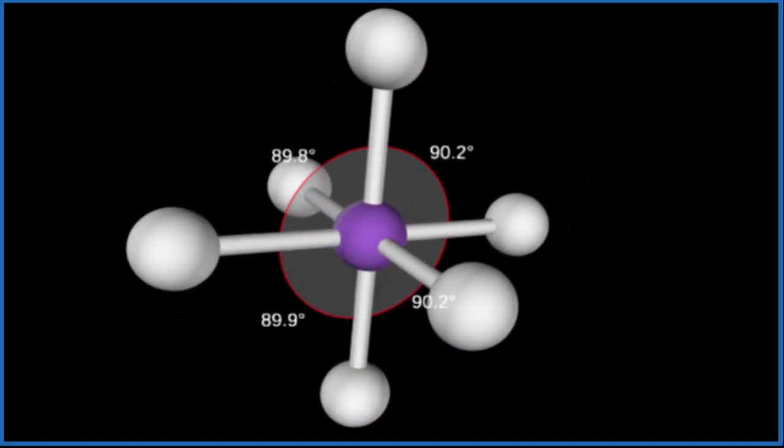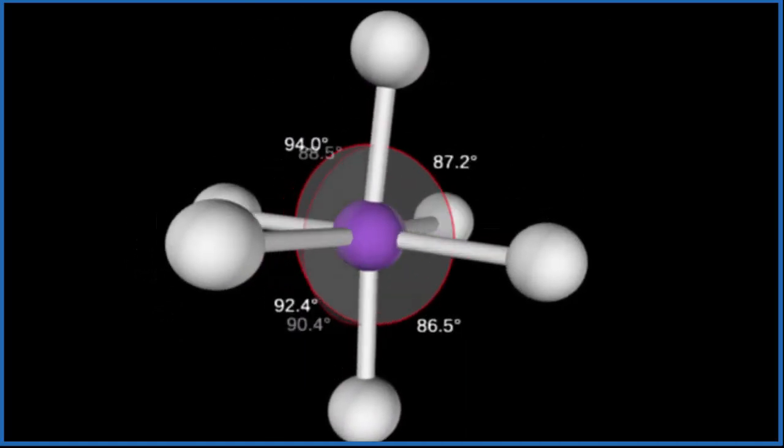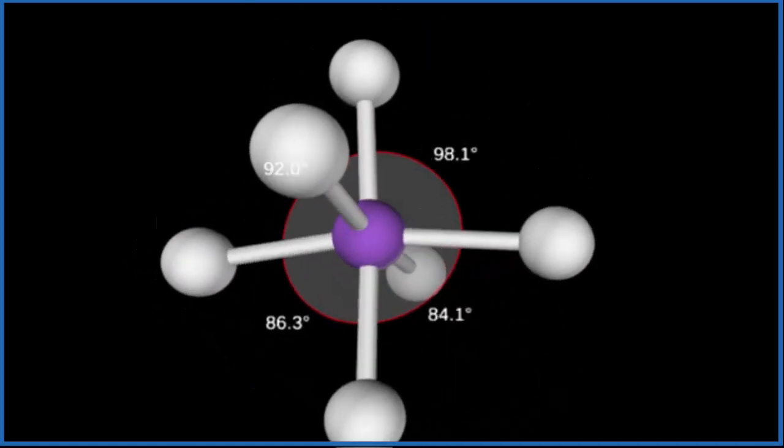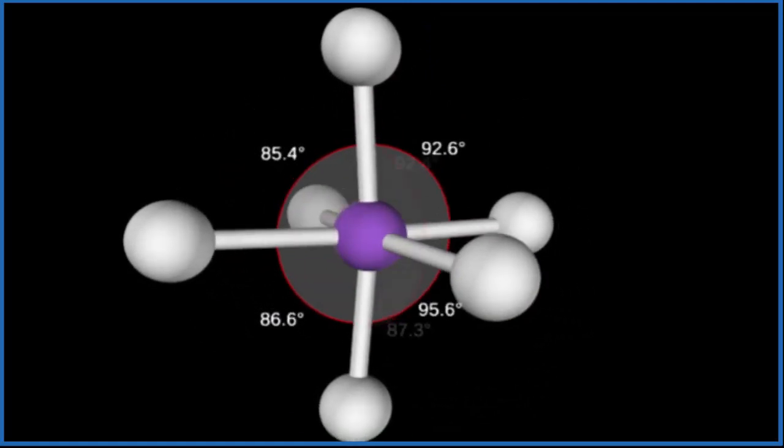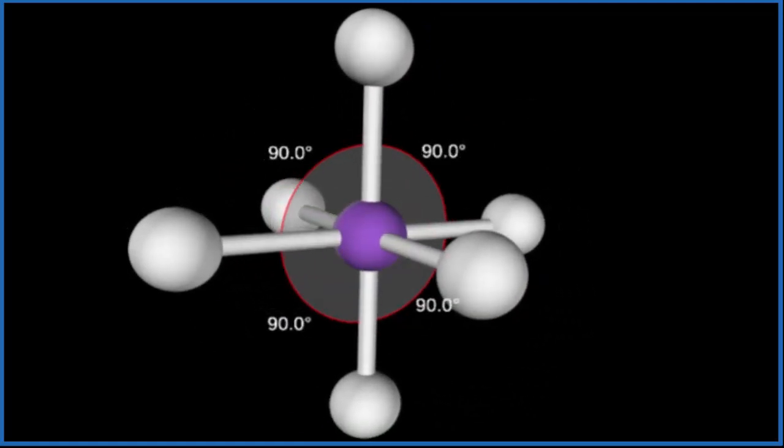So as we look at this, we can see that we have bond angles. Those are 90 degrees. Any of the bond angles you look at will be 90 degrees. The molecular geometry, we call that octahedral.